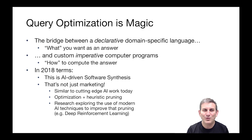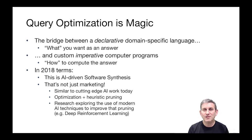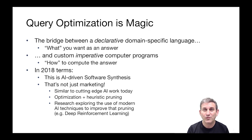Query optimization — it's magic, it's really cool. It's the bridge between a declarative domain-specific language like SQL and custom imperative computer programs. It allows people to think about what they want as an answer, and it automatically generates a program that says how to compute that answer. In 2018, when recording this lecture, we would call this AI-driven software synthesis — the automatic generation by computers of programs from high-level specifications. This is really what people work on in AI-driven software synthesis today.